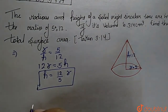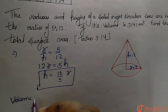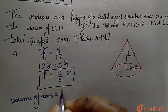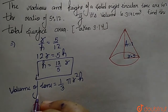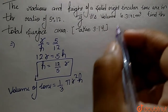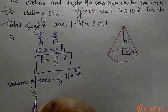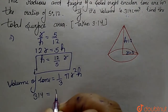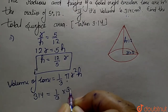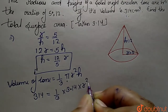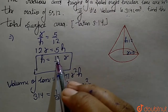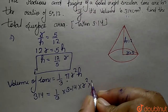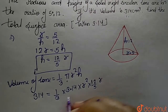Now we have to find the volume of the cone. Volume of cone equals 1 by 3 of pi r squared h. The volume is 314, so we put: 314 equals 1 by 3 times 3.14 multiplied with r squared, multiplied with h, where h equals 12 by 5 of r.